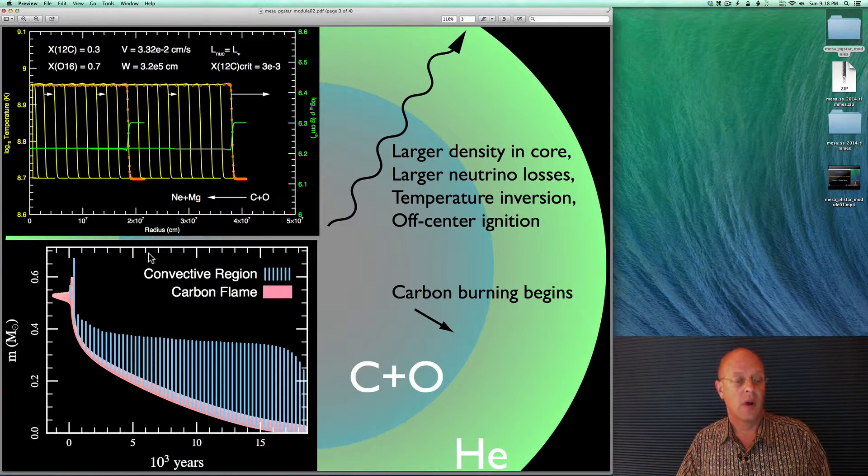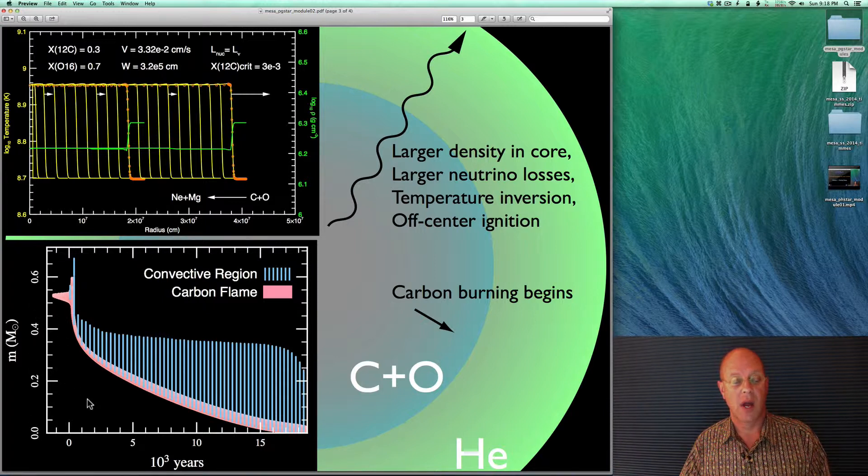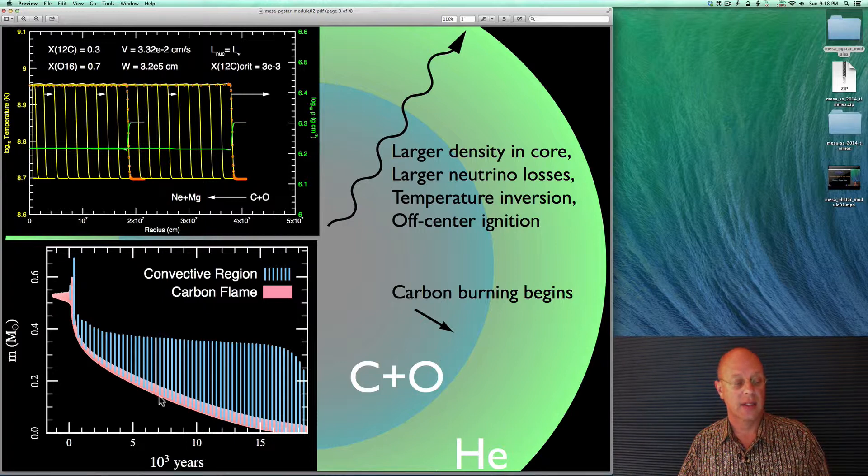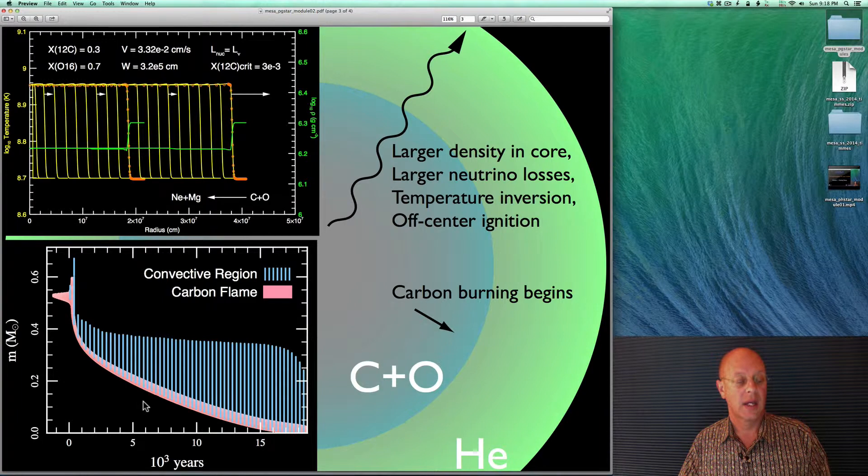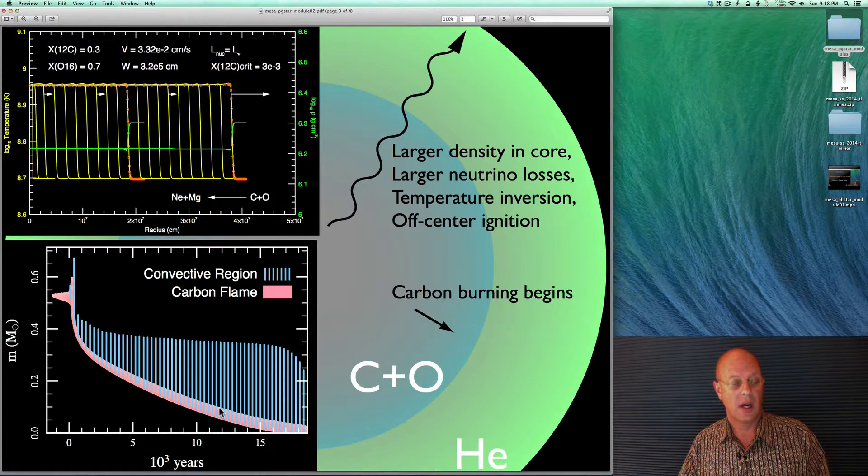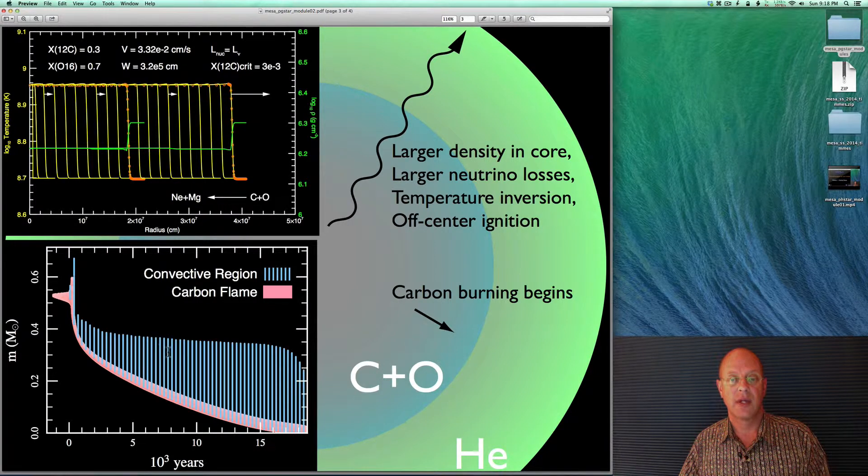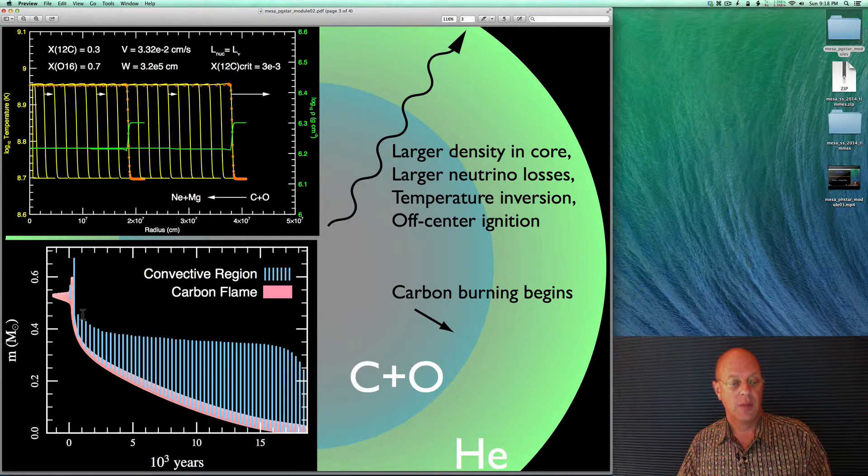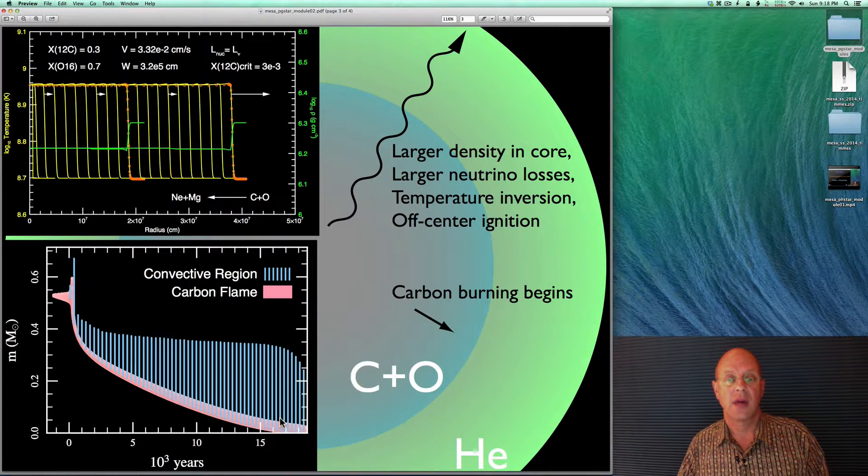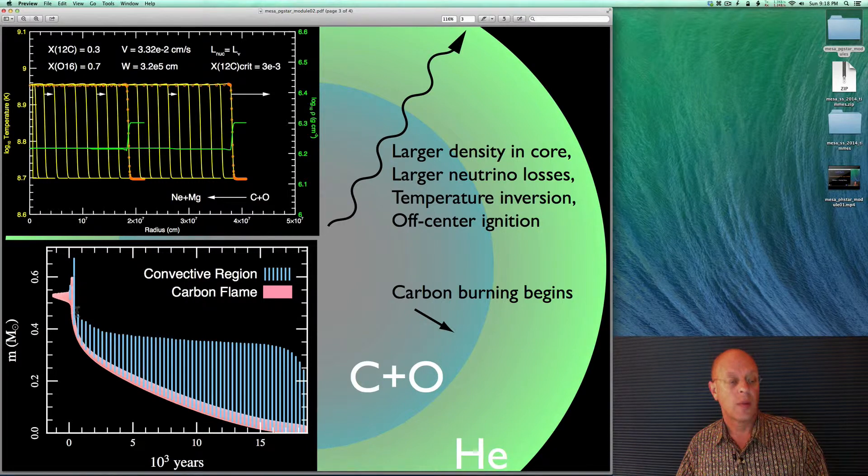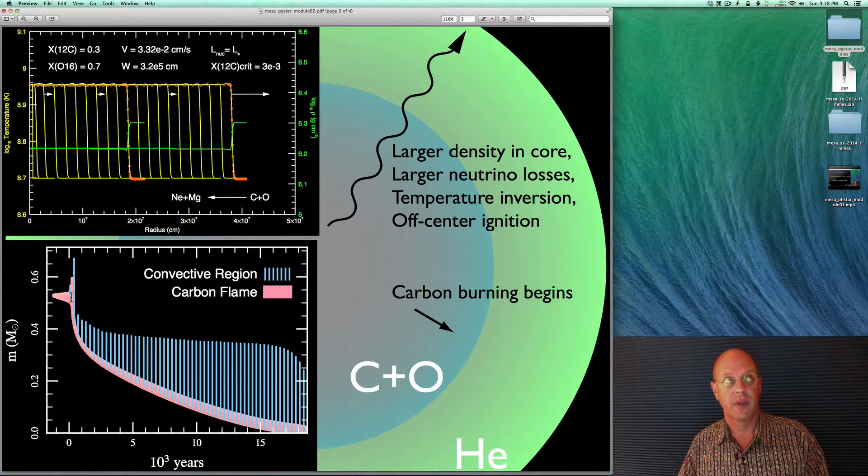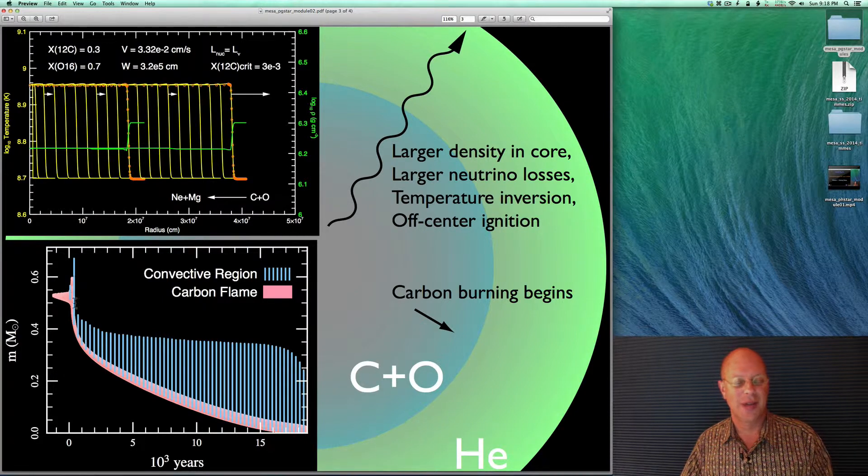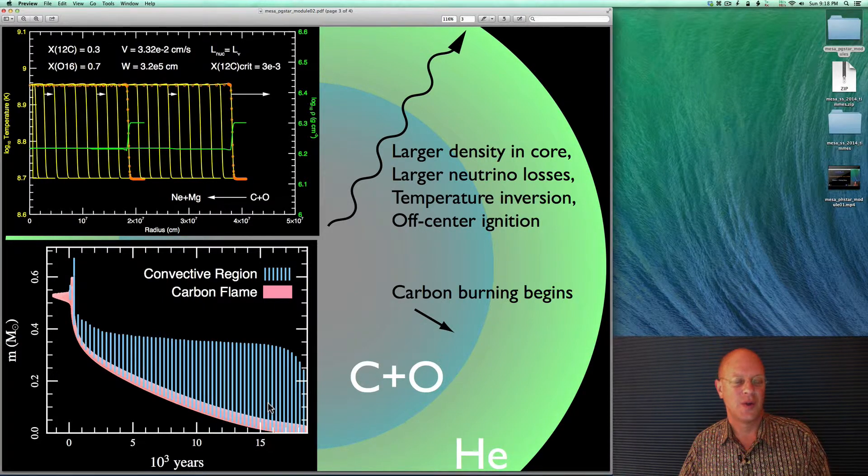The lower left-hand plot is from MESA. This is a Kippenhahn diagram with mass on the y-axis and time on the x-axis. The red here is the carbon burning, the peak carbon burning. And then behind the flame front is the blue convective region. So, these things are referred to as convectively bounded carbon flames. And in this particular case, it takes about 17,000 to 18,000 years for the flame to propagate from its ignition point of around 0.5 solar masses all the way into the center.